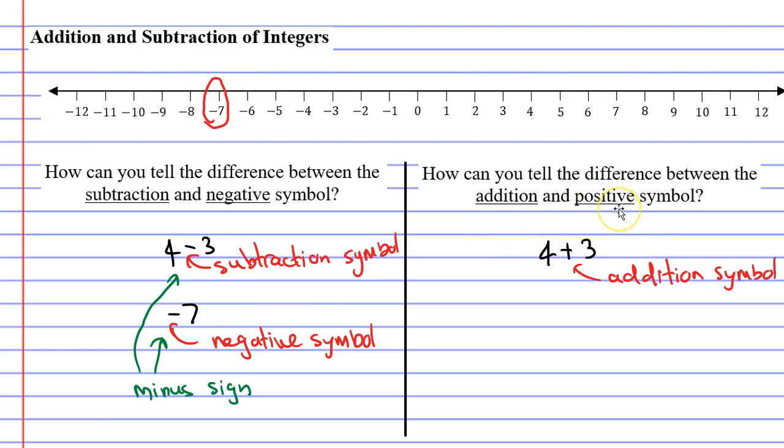And looking at the positive symbol, this is one that we don't see very often. And this could be something such as positive 7.